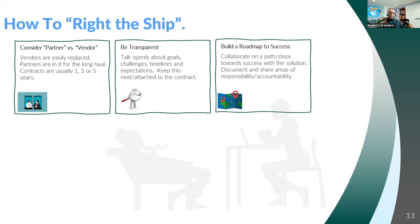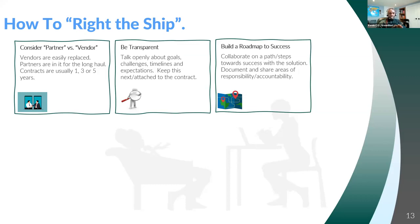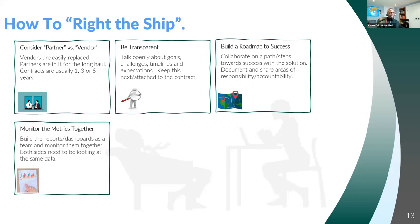What's key with this roadmap is that you want to document it and share areas of responsibility. Some of it is going to fall on you as the user of the technology — things like internal change management: getting your staff to meetings, making sure they're going through trainings, putting policies and processes in place so employees use the solution the way it was designed. That's heavily on your side as a nonprofit technology user. On the technology partner side, there's overcoming technical challenges, making sure the product works, making sure new features are coming out, and making training available. There's accountability on both sides.